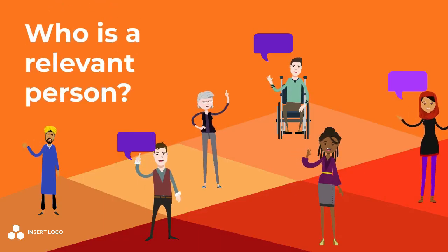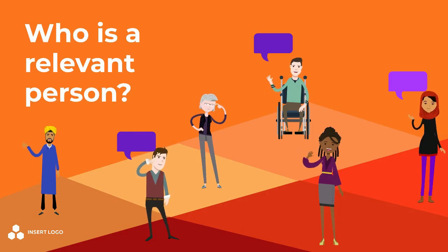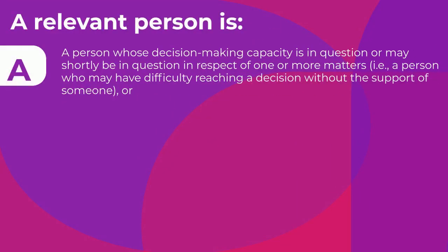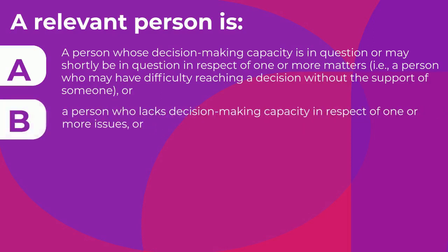Who is a relevant person? A relevant person is a person whose decision-making capacity is in question or may shortly be in question in respect of one or more matters. That is: A) a person who may have difficulty reaching a decision without the support of someone, or B) a person who lacks decision-making capacity in respect of one or more issues.